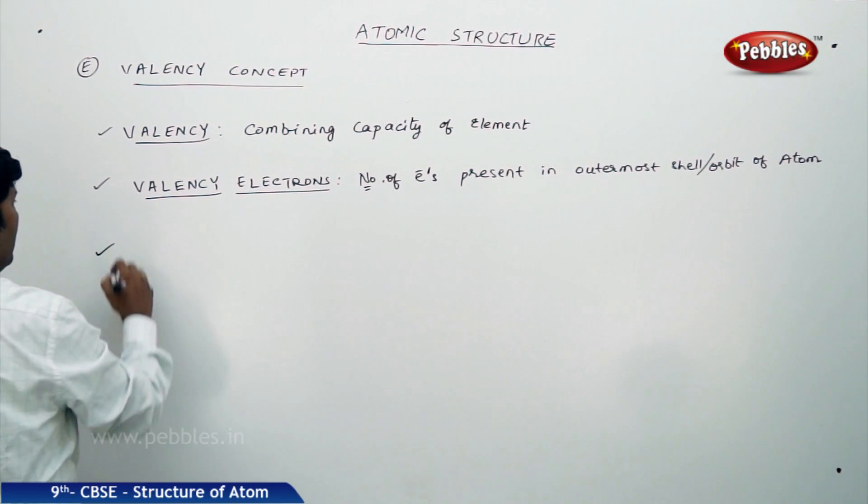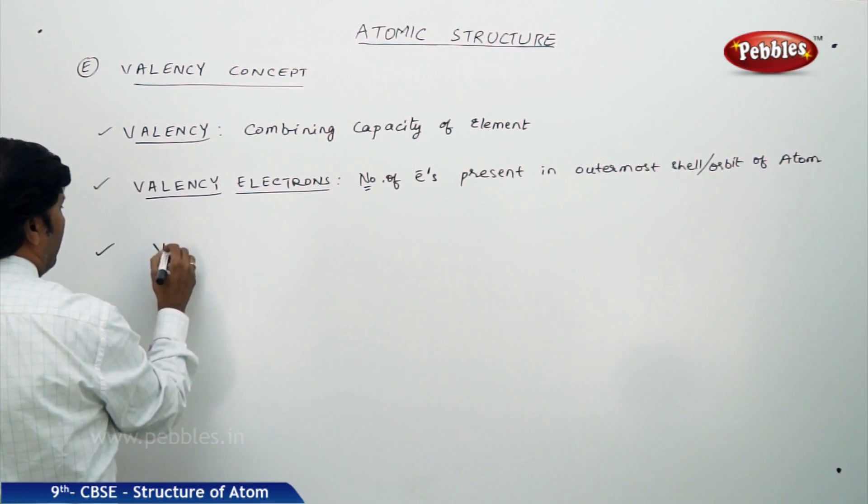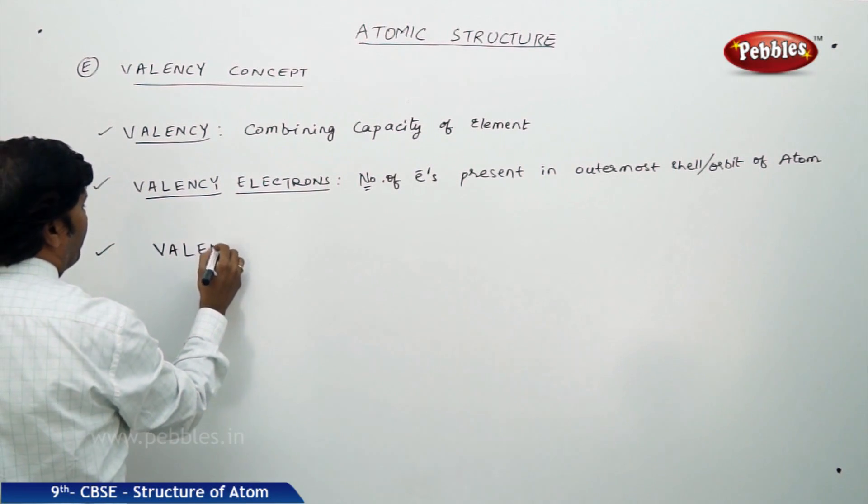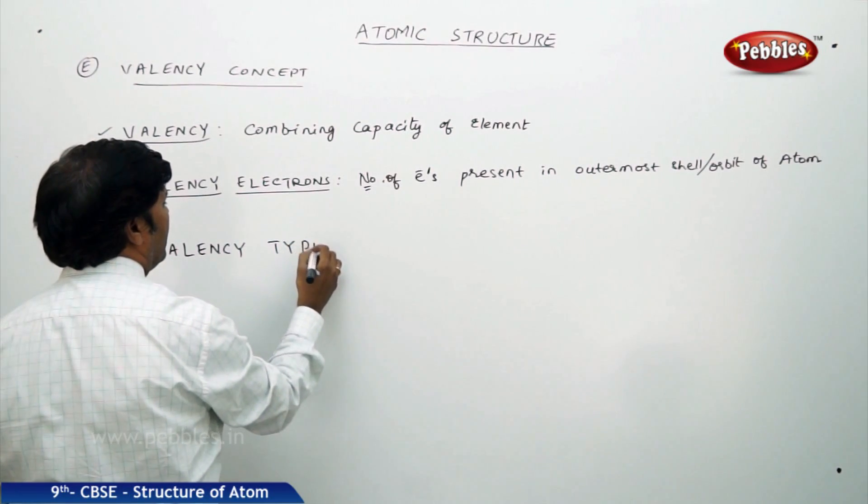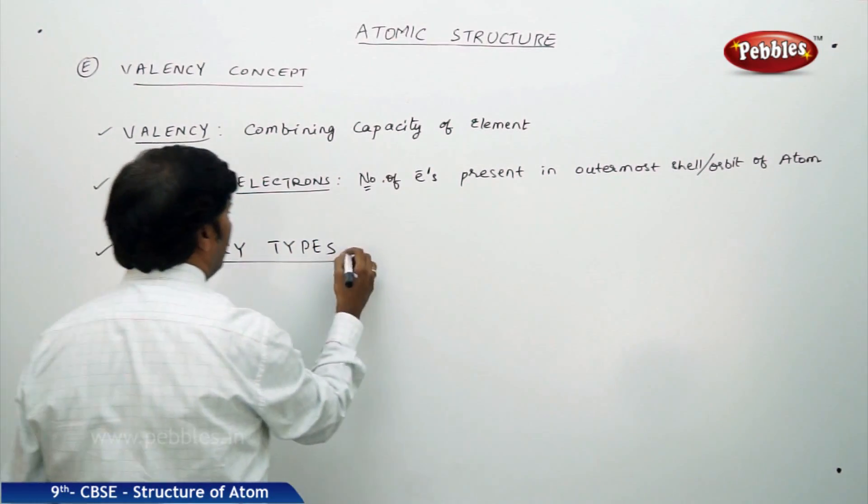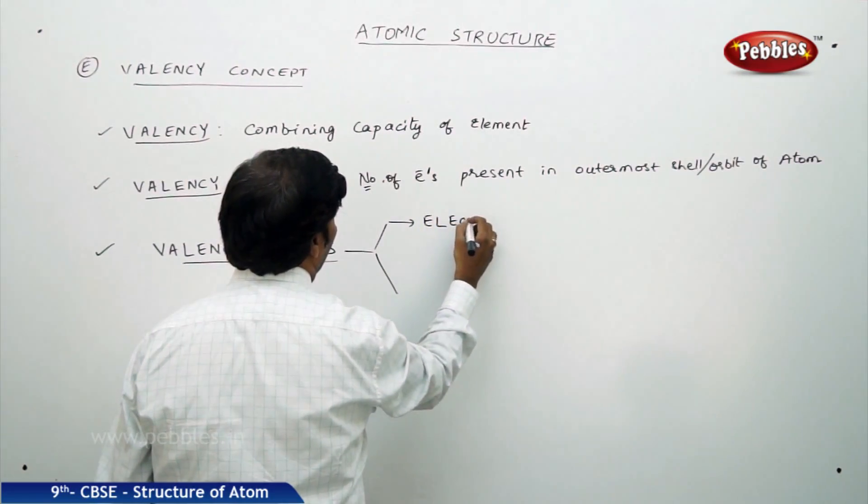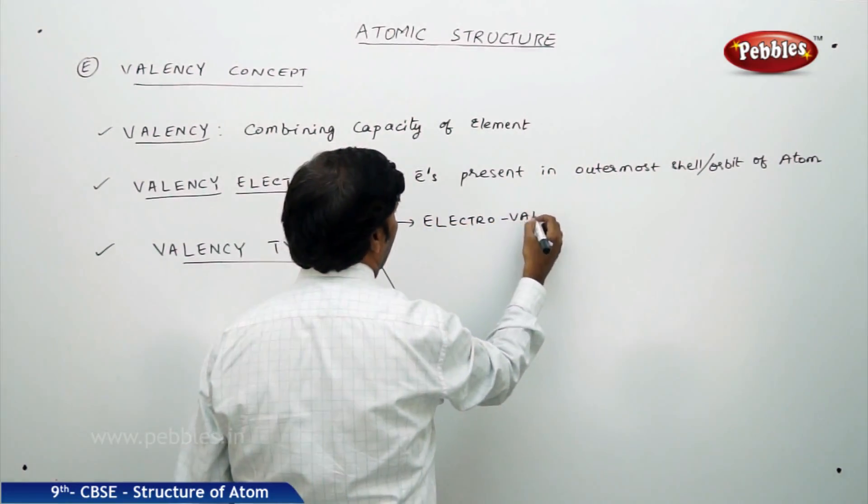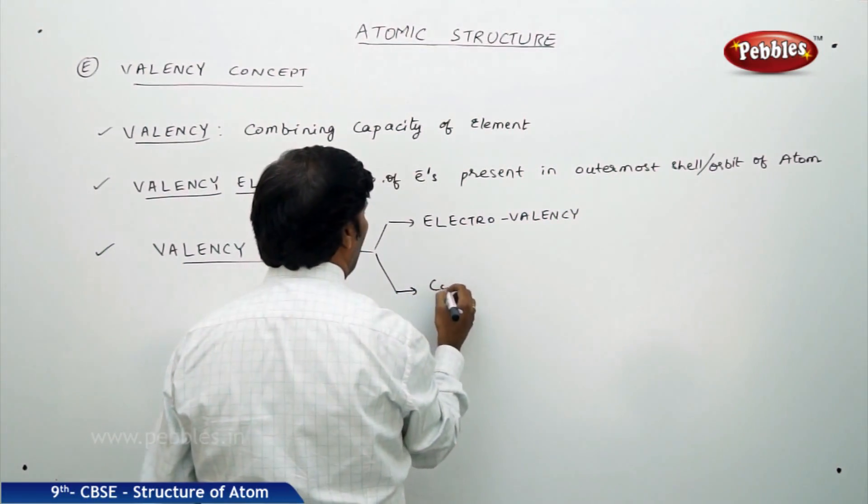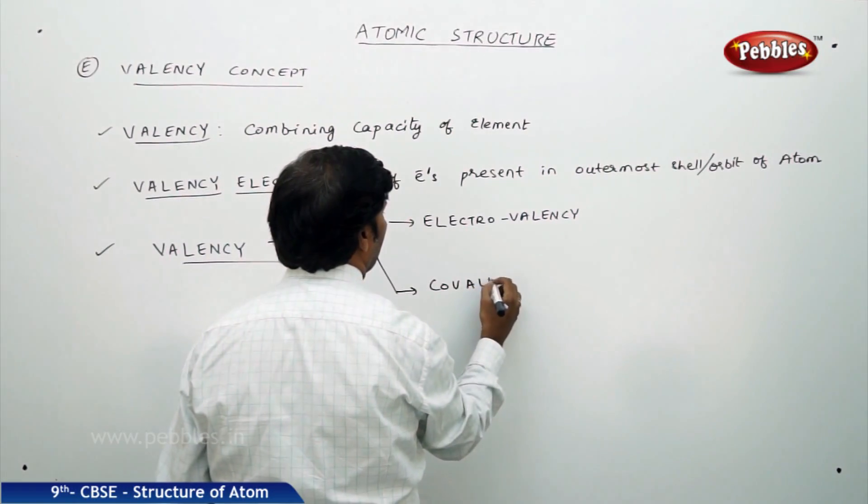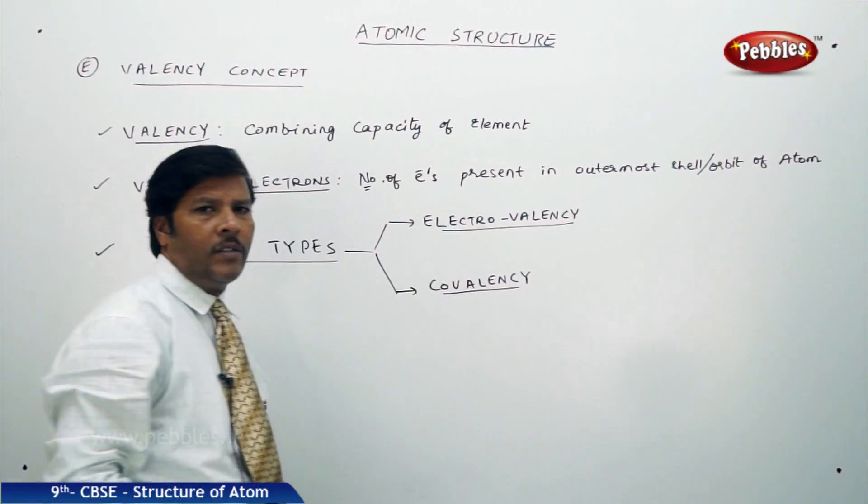Now, go for types of valencies. If you go for valency types, it is of two types. One is electrovalency and the other is covalency.